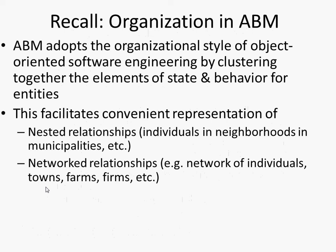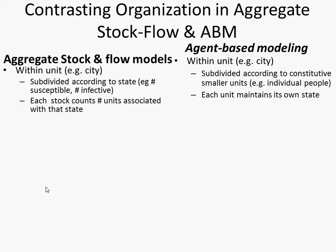Within an agent-based model we break down a population into individuals who maintain their own state. This affords us certain advantages — we can represent nested relationships. In the world, people live in neighborhoods within cities within broader jurisdictions like states or provinces. Similarly, within our model we have a corresponding structure: individuals contained in objects representing a neighborhood, which lives within a city. A network of individuals in the world corresponds to a network within our model.